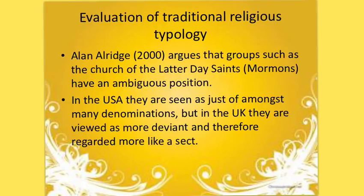Alan Aldridge in 2000 argues that groups such as the Church of Latter-day Saints — the Mormons — have a very ambiguous position. In the USA they are regarded as a denomination, whilst in the UK they are seen as deviant and therefore regarded as a sect. We have to be very careful when looking at typology because it can vary from society to society, meaning it may be highly problematic to apply a one-size-fits-all definition to every single institution.